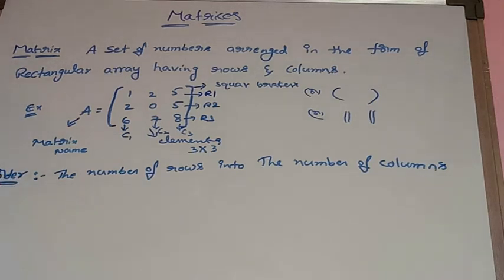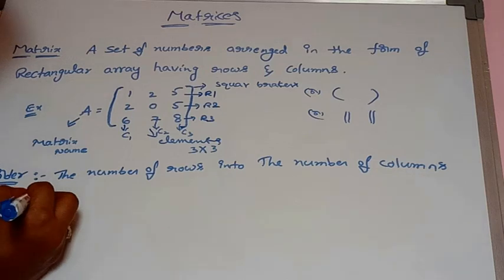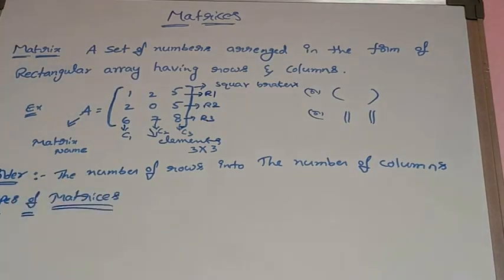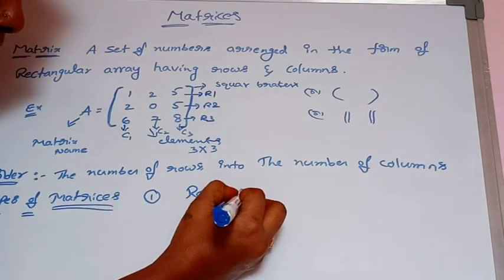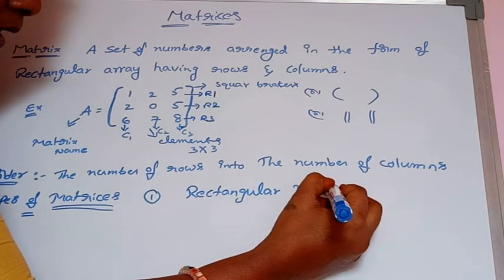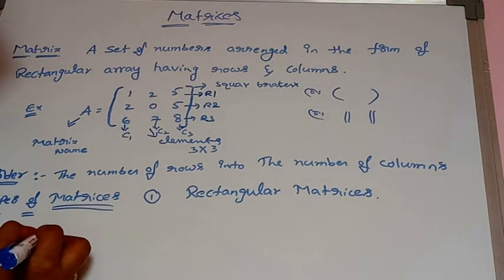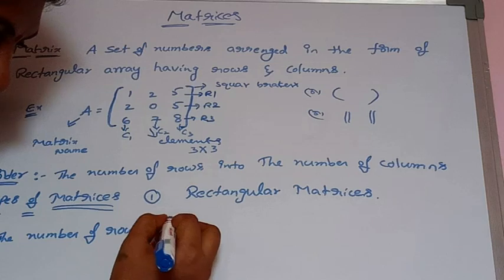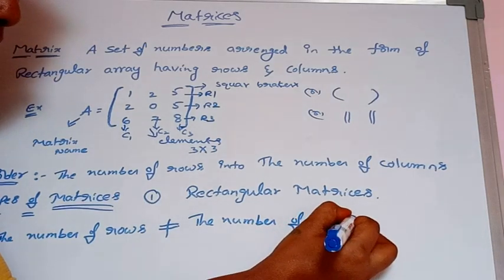Matrices are of different types. The first type is the rectangular matrix. A rectangular matrix means the number of rows is not equal to the number of columns.